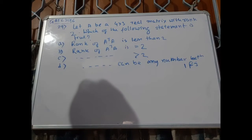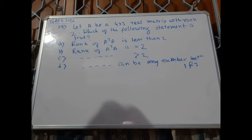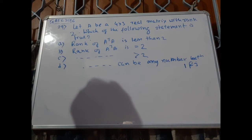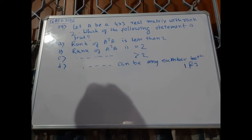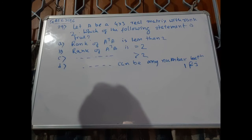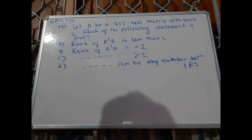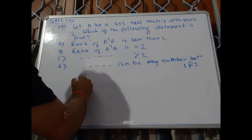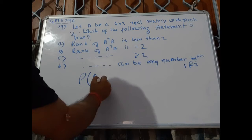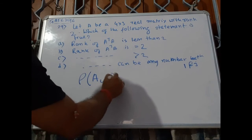This is problem number 29. Let A be a 4×3 real matrix with rank 2. Which of the following statements is true? Option A: rank of A transpose A is less than 2. Option B: rank of A transpose A equals 2. Option C: rank of A transpose A is greater than 2. Option D: rank of A transpose A can be any number between 1 and 3.